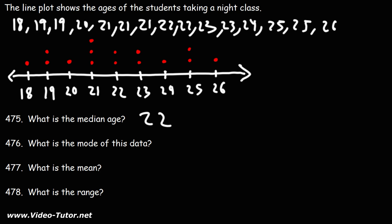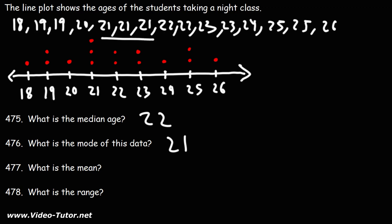What is the mode of this data? The mode is the number with the highest frequency, and that's 21. As you can see, that number occurs three times.